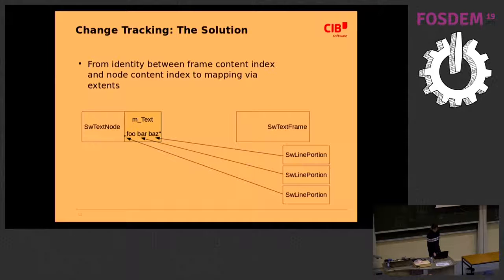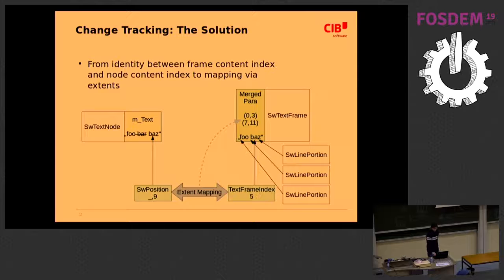With this new merge paragraph data type, we now have two different indexes: a model index, the SW position, and a text frame index. We have to use the extent information in the merge paragraph to map between the two.